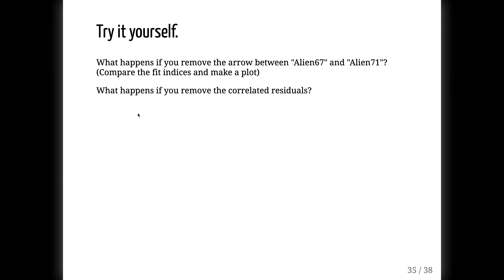Now I'd like you to try it yourself. What happens if you remove the arrow between alienation 67 and alienation 71? And what happens if you remove the correlated residuals? I'm interested in what you would conclude from those modifications — evaluate the fit indices and compare them to the model we have. It's basically taking the original script and modifying it.